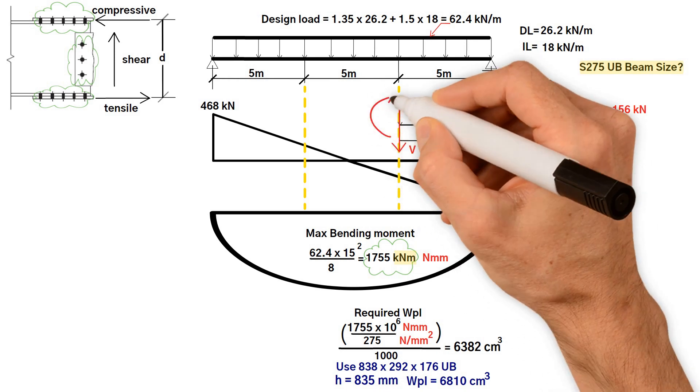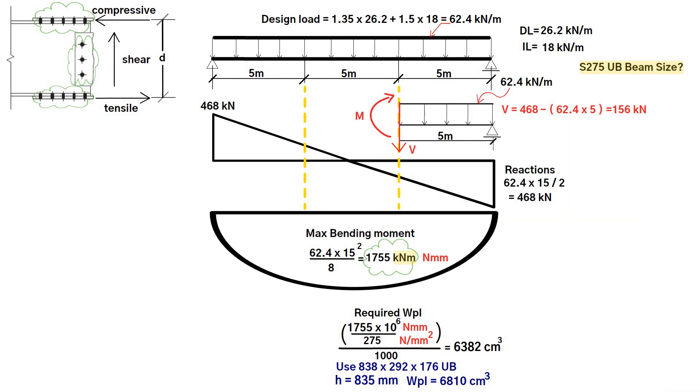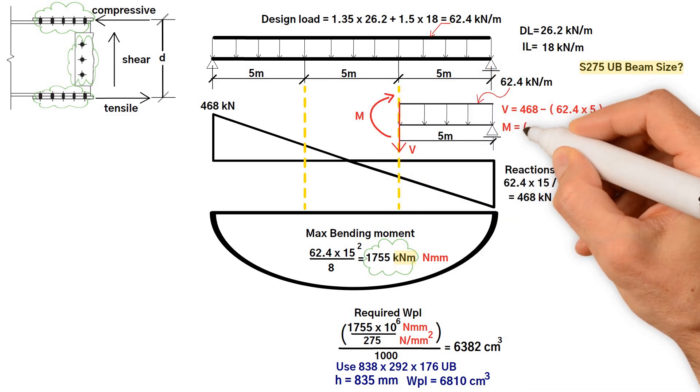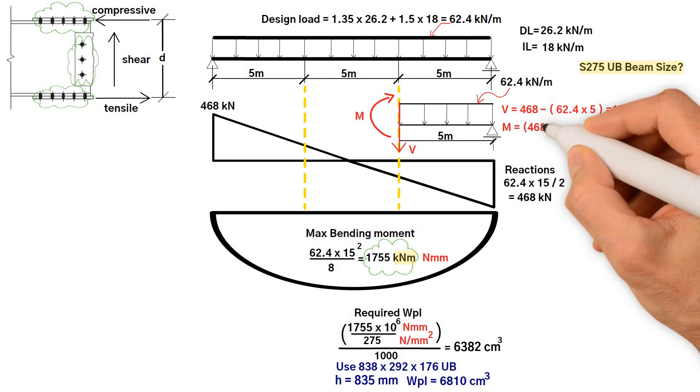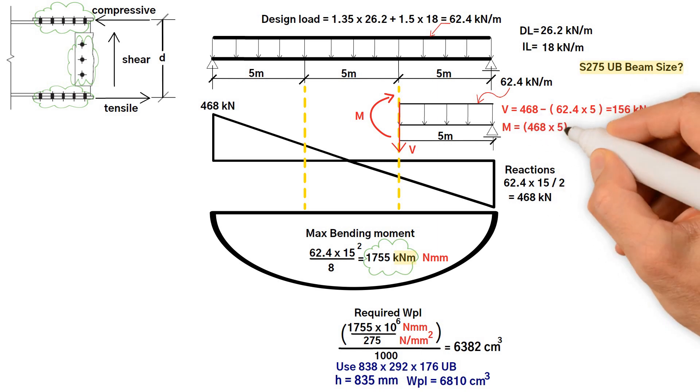Then work out the bending moment at the splice, equals the reaction 468 kilonewton times the distance from the splice, which is 5 meters, minus the design load 62.4 kilonewton per meter times the distance between the support and the next splice, which is 5 meters, times half the distance, which is 2.5 meters, equals 1560 kilonewton meter.